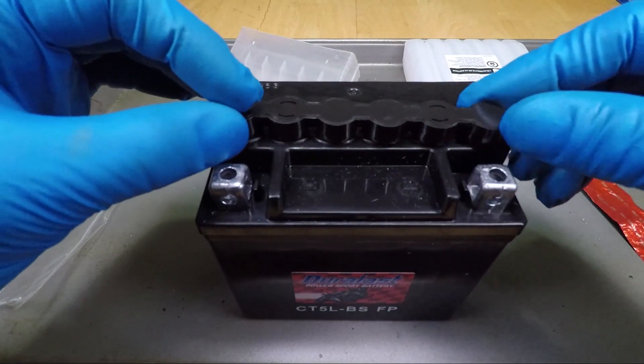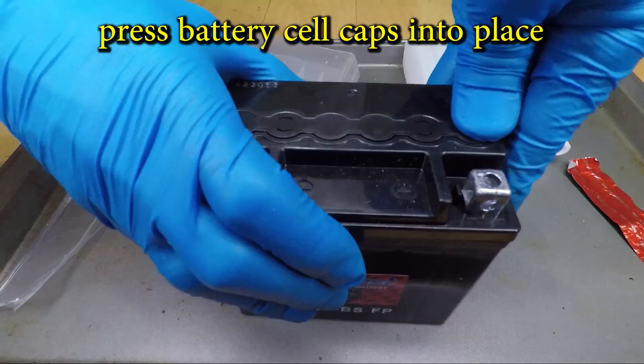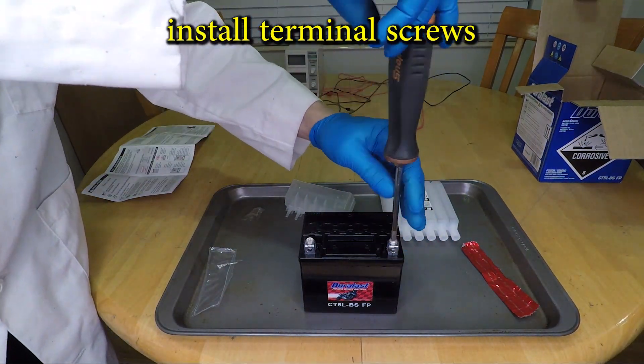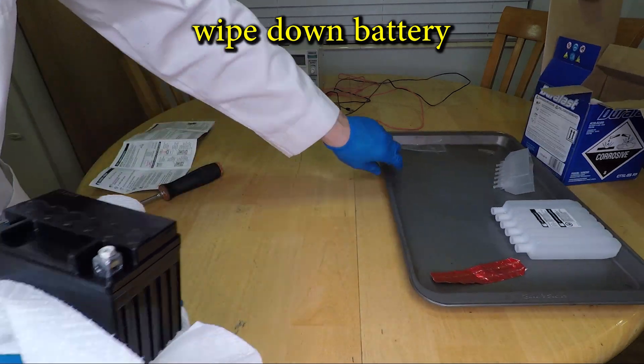After one hour, it's time to install the battery seal. This part is a tight fit and will keep any acid from spilling out. Install the terminal screws, then wipe down the outside to get any extra acid off.